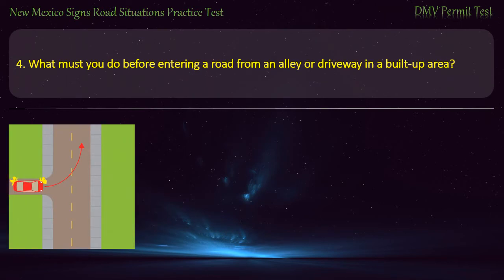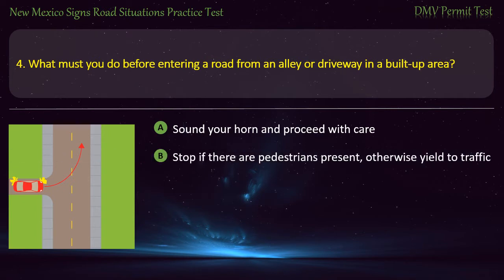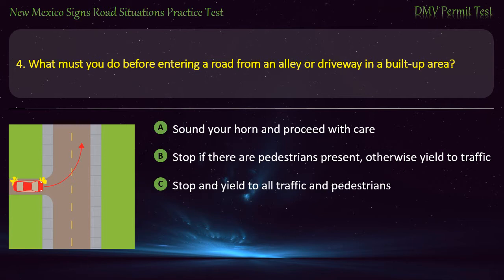Question 4. What must you do before entering a road from an alley or driveway in a built-up area? Options: Sound your horn and proceed with care; stop if there are pedestrians, otherwise yield to traffic; or stop and yield to all traffic and pedestrians. Answer: Stop and yield to all traffic and pedestrians.